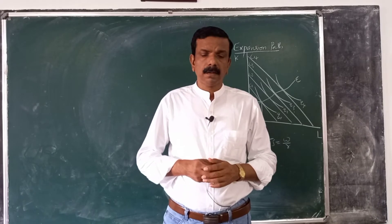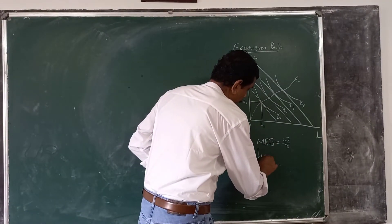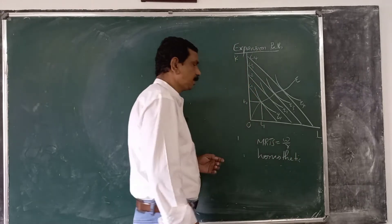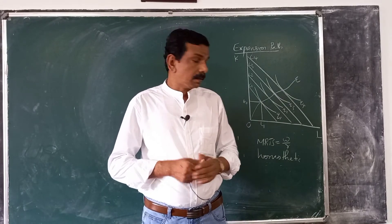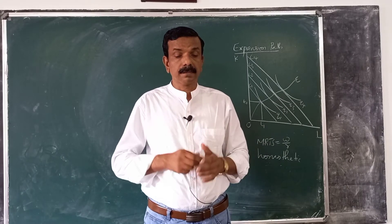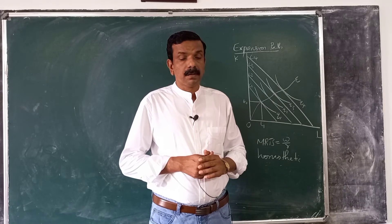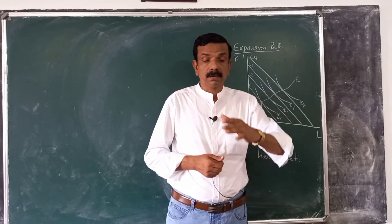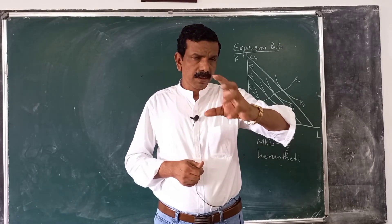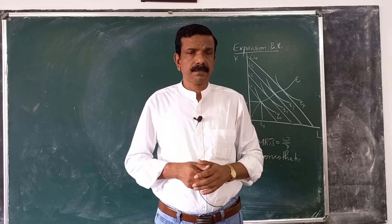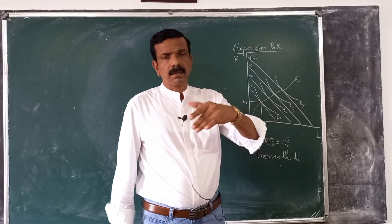It can be shown that if a production function exhibits constant returns to scale, or more generally if the production function is homothetic or homogeneous, then the expansion path will be a straight line, because MRTS depends only on the ratio K/L. Since the K/L ratio is constant along a linear expansion path, MRTS will also be constant. So for homogeneous functions, the expansion path will be a straight line.